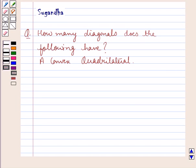Hello and welcome to the session. Today I will help you with this question. The question says how many diagonals does the following have? A convex quadrilateral.